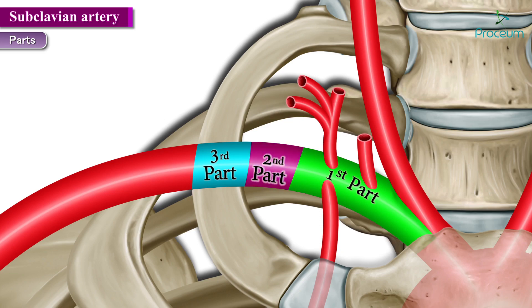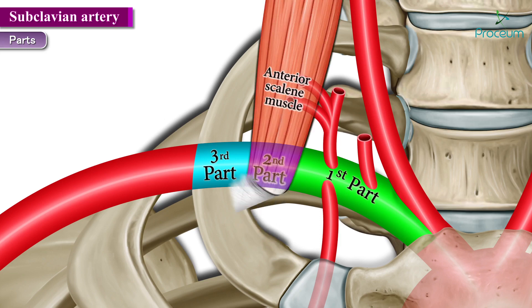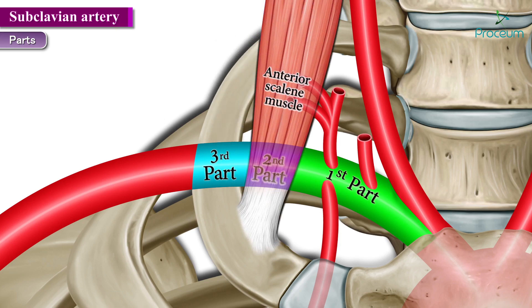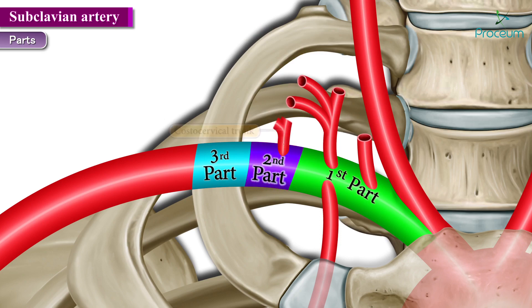The second part of the subclavian artery lies exactly posterior to the anterior scalene muscle. With the muscle removed, you can visualize this second part clearly. This part gives rise to the costocervical trunk as it courses upwards.